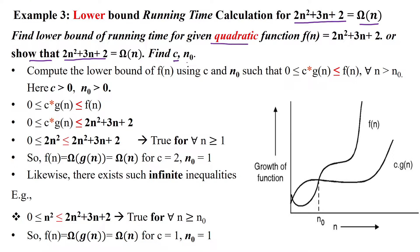Find the constant c and initial input size n₀. For computing the lower bound, we use the criteria: 0 ≤ c·g(n) ≤ f(n) for all input size n greater than initial input size n₀. Here n₀ and the constant are always positive numbers. Based upon that, we are substituting f(n) = 2n² + 3n + 2 in the given criteria.